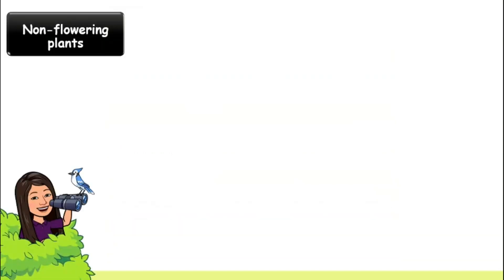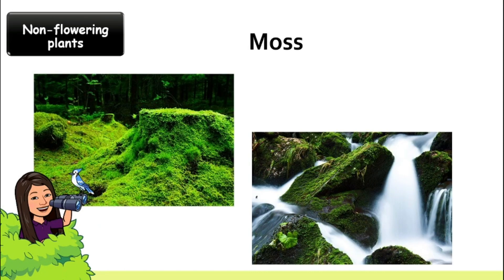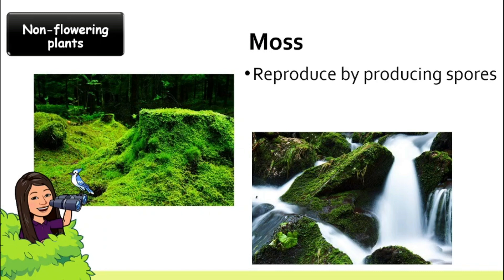The first group of non-flowering plants is moss. Moss actually reproduces by producing spores. If you look at the picture, can you identify which part is the leaf, the stem, and the root? Not that easy, right? This is what makes moss non-vascular.